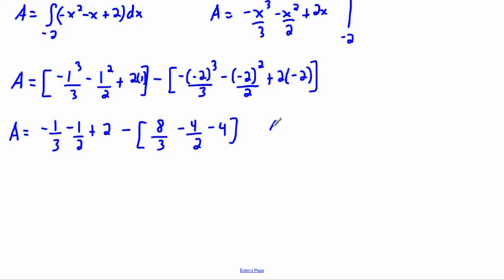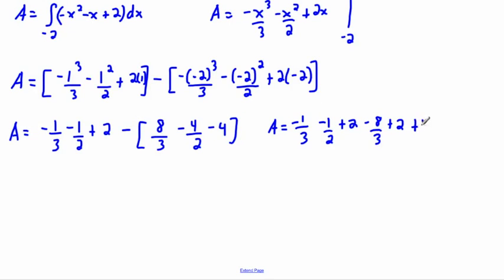Putting these together: a equals negative one-third minus one-half plus two. Now I want to get rid of the square bracket and multiply the negative one through everywhere — so that becomes minus eight over three. Minus minus gives plus, so plus four over two, which is just two, so plus two. And minus minus four gives plus four.